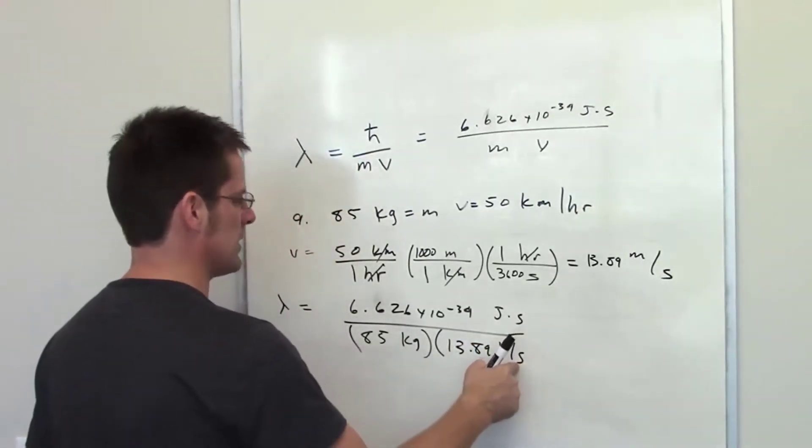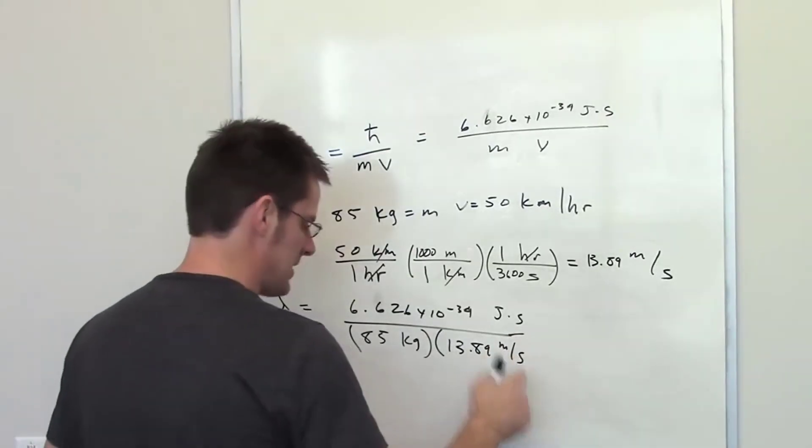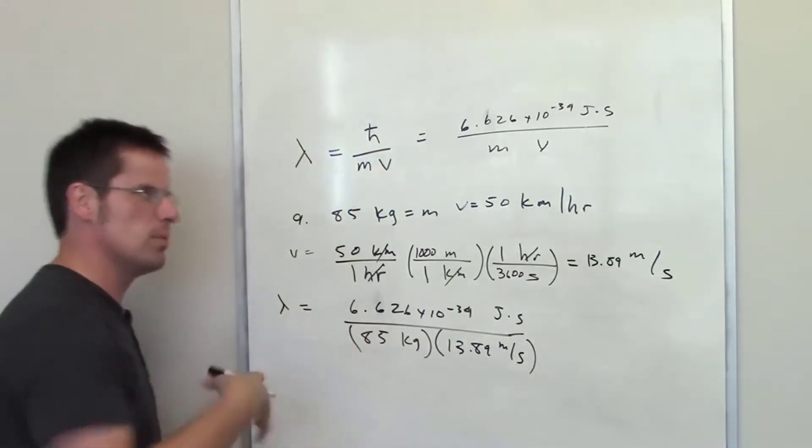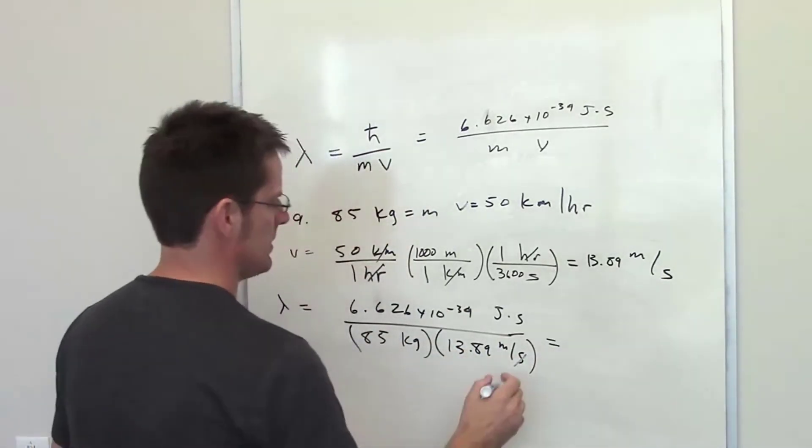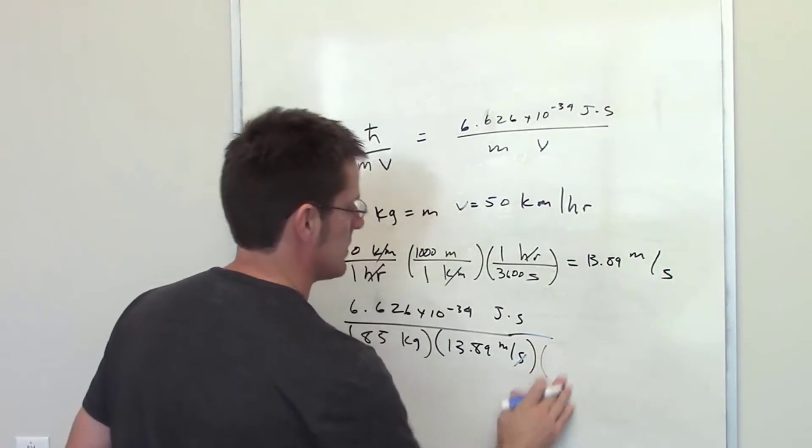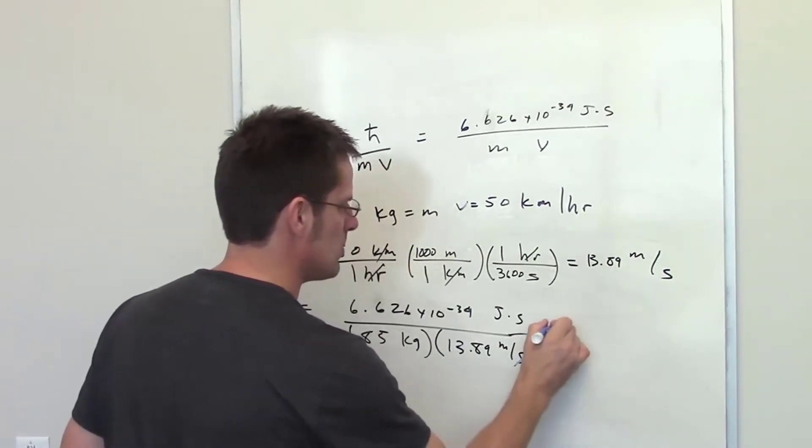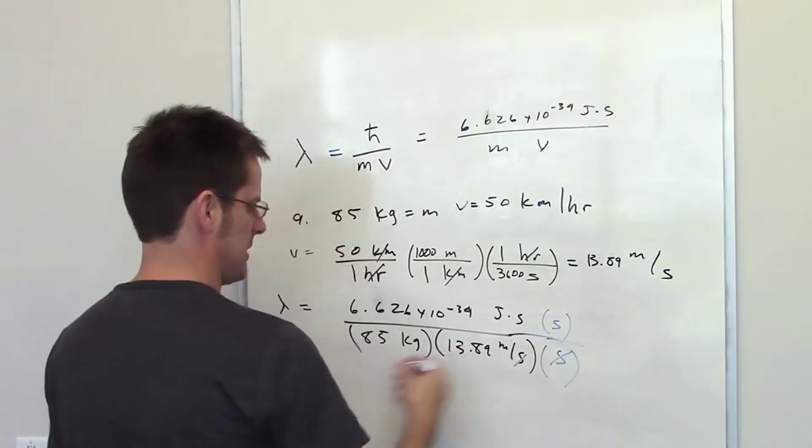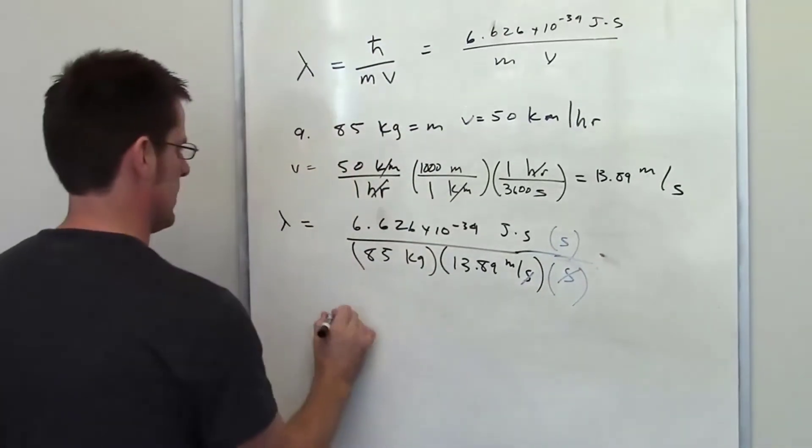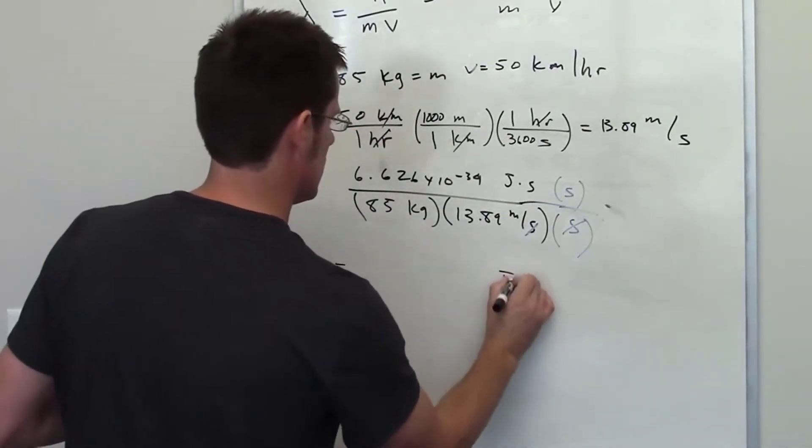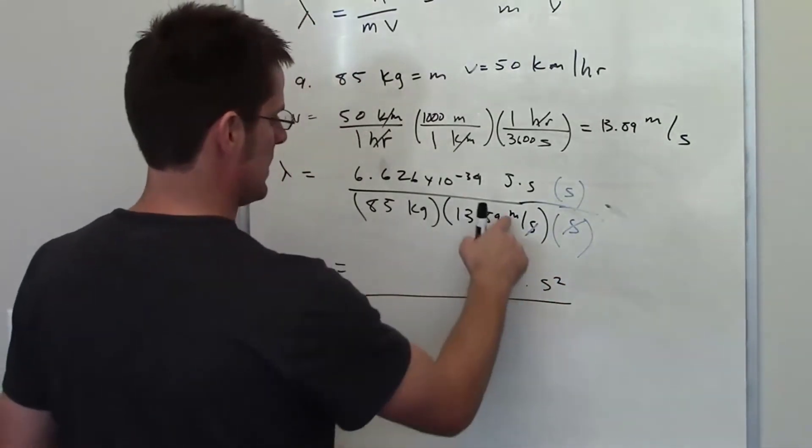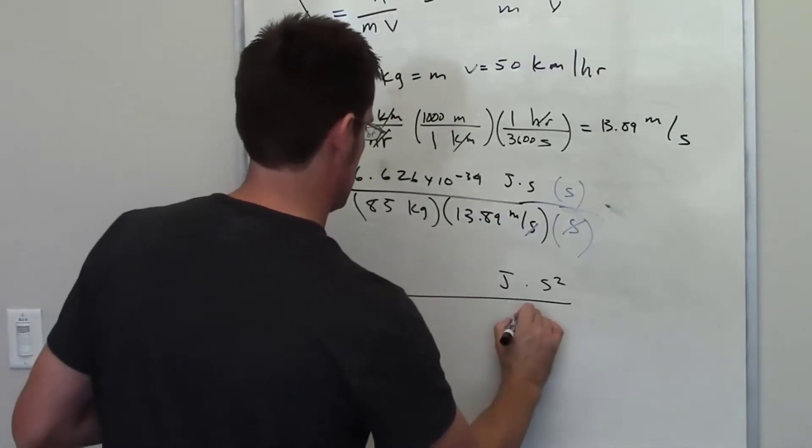You'll notice that my seconds is in the denominator of the denominator. Having seconds in the denominator of the denominator is, as far as algebra is concerned, like having it in the numerator. If I multiply the denominator by seconds and the numerator by seconds, my seconds cancel each other out. Unit-wise, my final units end up being joules times seconds squared in the numerator, and in the denominator I end up getting meters times kilograms.